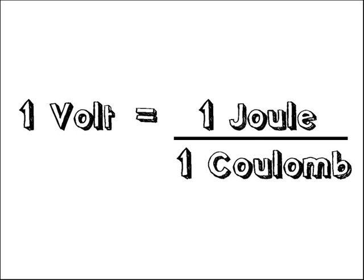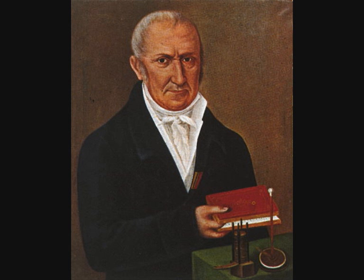A battery gives every coulomb of charge that comes out of it the same electrical energy. This is called voltage, which is joules of energy per coulomb. Named after some wee guy called Alessandro Volta, who was an Italian count.